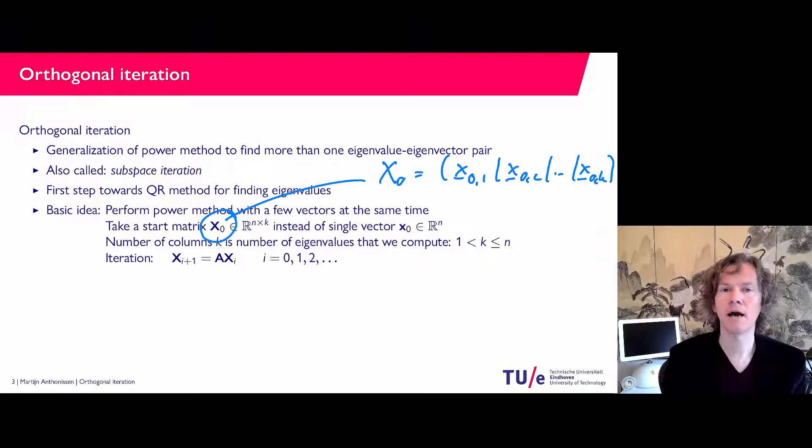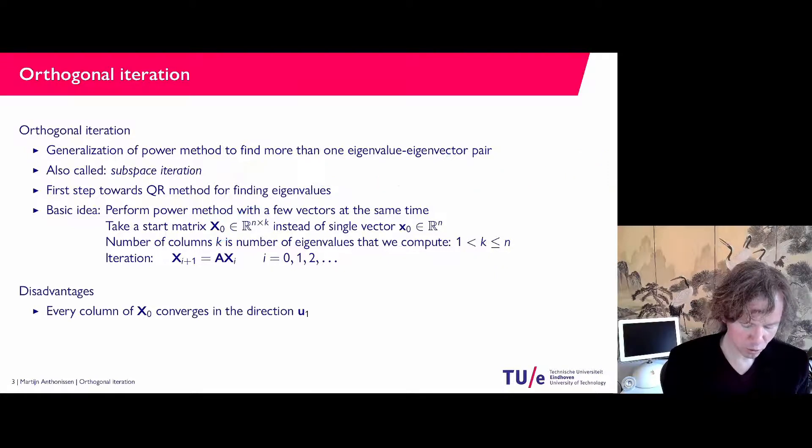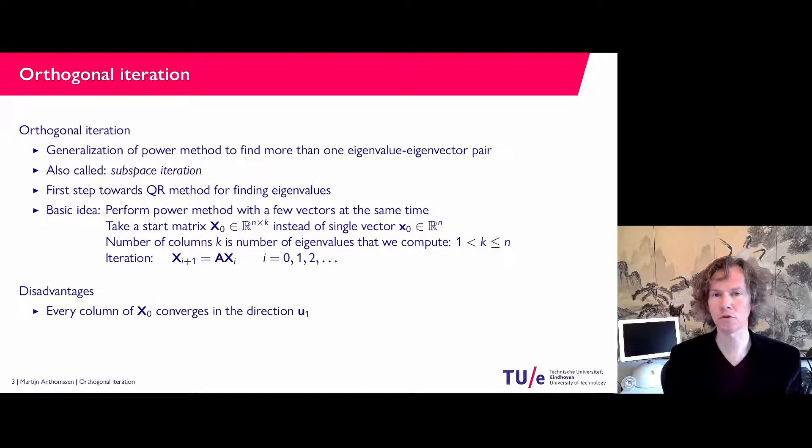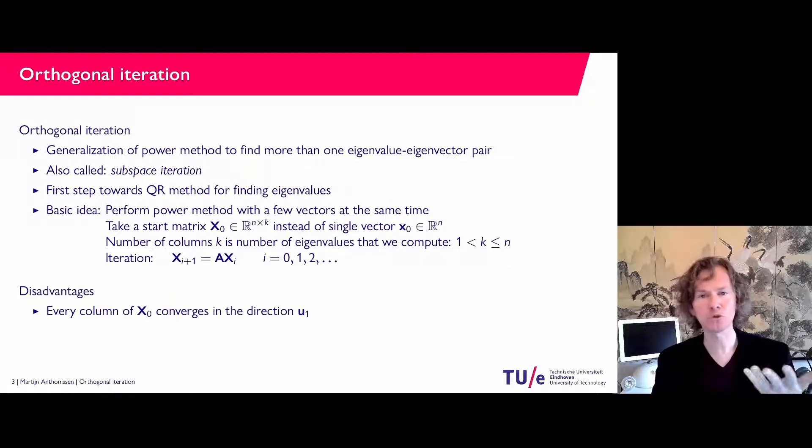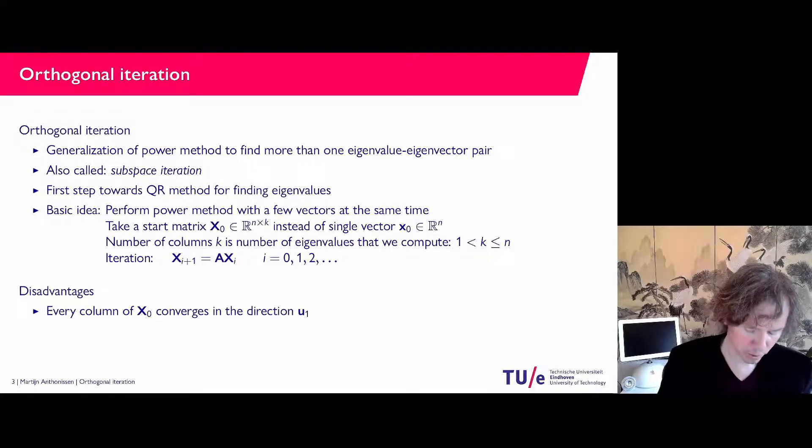Now we can immediately see that this is not going to work. So why is this not going to work? Well all of the columns, all of those different vectors in X_0, they will all converge to the same eigenvector u_1 that corresponds to lambda 1. So that's not what we want.